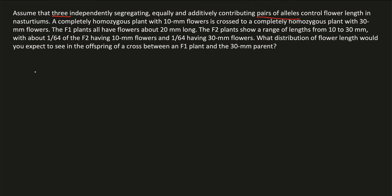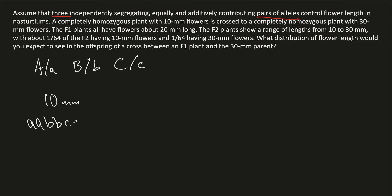Three pairs of alleles means you have six alleles total. I'm going to call them big A, little a, big B, little b, and big C, little c. They control flower length in nasturtiums. A completely homozygous plant with 10mm flowers is crossed with a completely homozygous plant with 30mm flowers. I'm going to assume the 10mm flower is completely homozygous for the recessive genes, and the 30mm flower is totally homozygous for the dominant alleles.